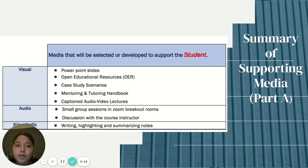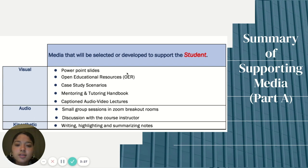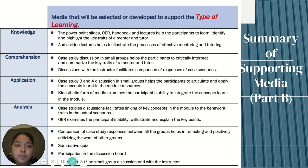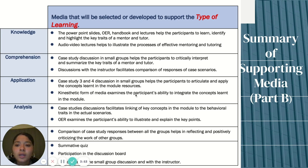For the summary of supporting media, we thought about the media that could be selected or developed to support the student across three different types: visual, audio, and kinesthetic. Here's a list of media we think would support the mentors and tutors in training. We also considered media that could be selected or developed to support the type of learning, going through the different types: knowledge, comprehension, application, analysis, synthesis, and evaluation — and what media can be used to support those different types of learning in our training.